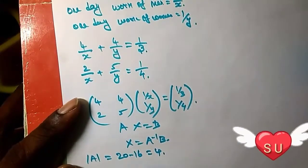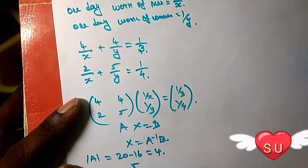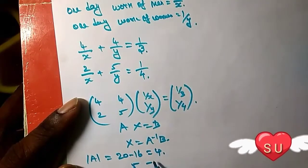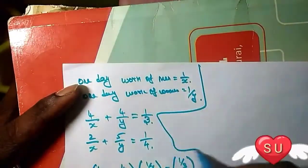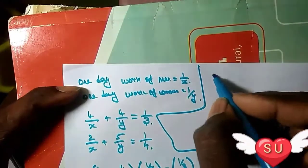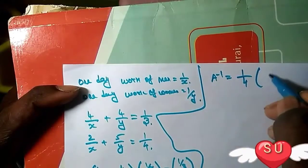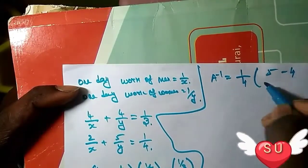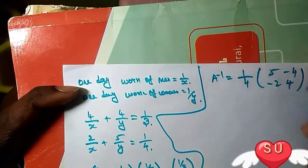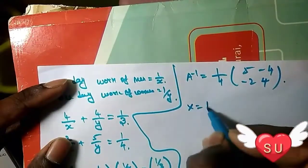Next, adjoint: five, four - transpose - five, minus four, minus two, four. So A inverse equals one divided by four, times the matrix: five, minus four, minus two, four.